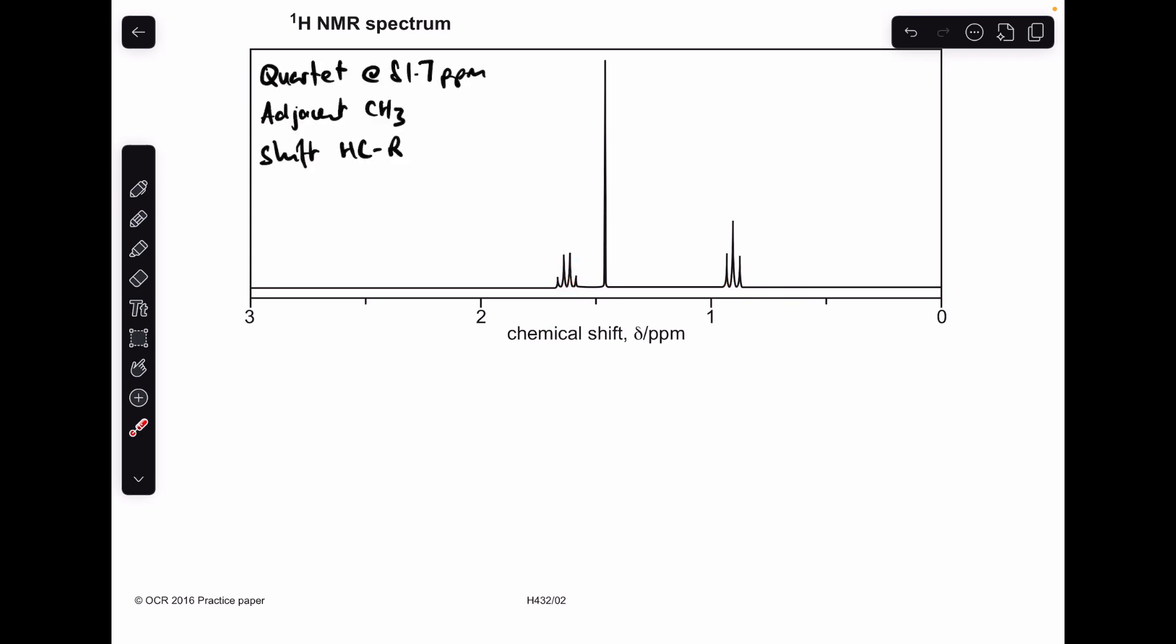So we're starting with this peak here. That's a quartet, we've got these four lines, it's roughly delta 1.7 ppm. So what does a quartet mean? It means the protons that have caused that signal are adjacent to a CH3 group. And all we can say about the shift is that it's an H to C to R.